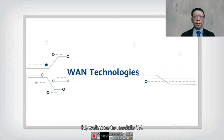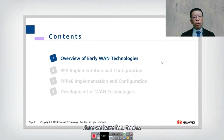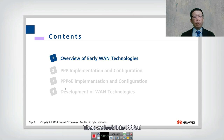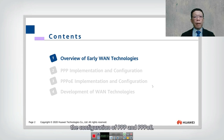Welcome to module number 17. This topic we are going to look into WAN technologies. We have four topics: first, an overview of early WAN technologies; then PPP implementation and configuration; then PPPoE or point-to-point protocol over internet implementation and configuration; so we are going to look into both PPP and PPPoE configuration.